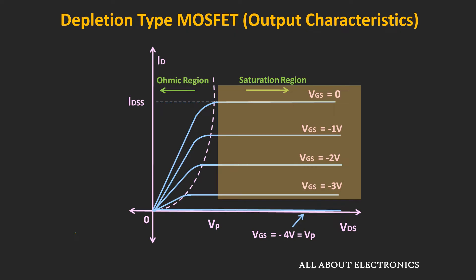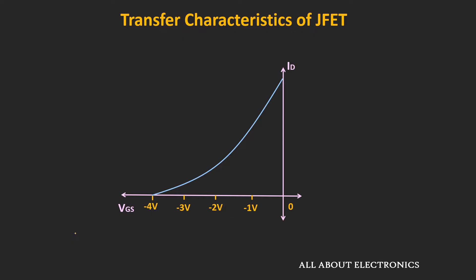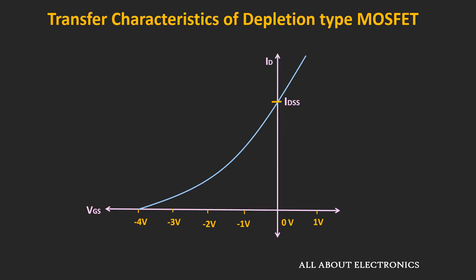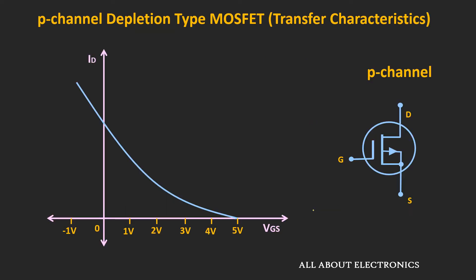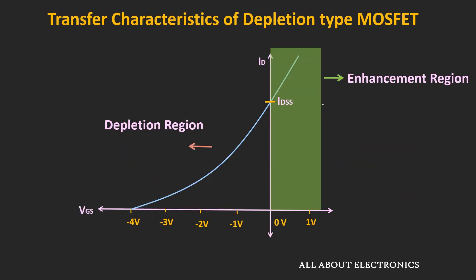The transfer characteristic of this depletion type MOSFET is similar to the JFET. The only difference is that the transfer curve is extended beyond IDSS. For the N-channel MOSFET, it works for positive values of VGS, while for the P-channel MOSFET, it also works for negative values of VGS. When operated beyond IDSS, it is called the enhancement region; when operated below IDSS, that region is called the depletion region of operation.